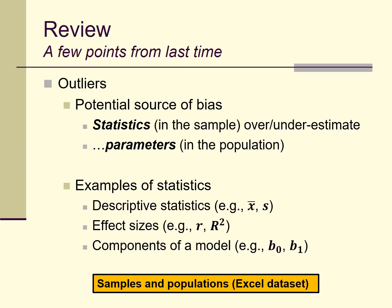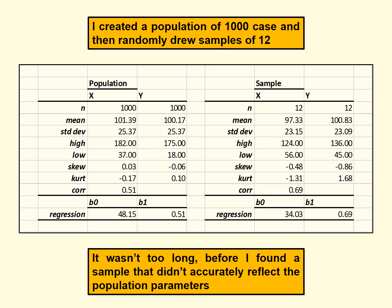In Excel, I was playing around one day and I created a population of a thousand cases, each of which had a value for variable x and variable y. I tried to make sure that these variables were normally distributed. On the left side of the slide, you can see the summary statistics for all the data — the full thousand cases, the mean and standard deviation, upper and lower values, skew and kurtosis, for variable x and variable y. It just happens to be the case that the correlation between those two variables is about 0.5.